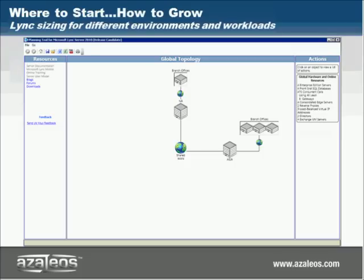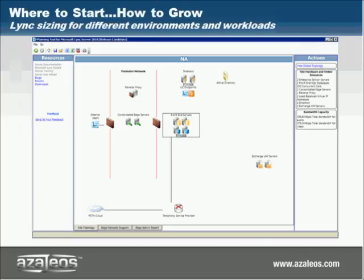Here's an actual depiction of a very simple global topology that was produced within the planning tool. You can see there's a North America site and an Asia site. Off North America, you have one branch office; off the Asia site, there are three branch offices. You can see a listing of the servers that are required over on the right, and then if you drill down into the global topology, it gives you more of a site-level design. Here you have all the servers defined for the North America site, and you can go in and define your details within the Edge network and then produce a report that you can provide to your firewall and network people to start the finer details of the planning stage.